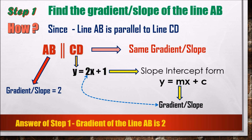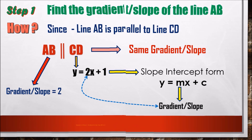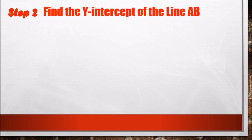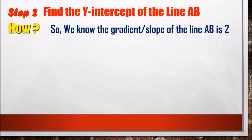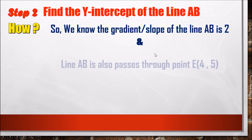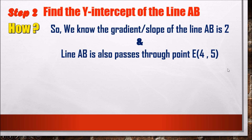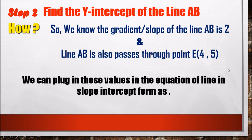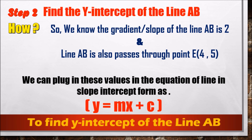That's easier than you think! Now let's move on to step 2: find the y-intercept of line AB. The y-intercept is the value of y when x is 0, or the point where a line cuts the y-axis on the graph. Since the gradient of line AB is 2, and line AB passes through point E where x is 4 and y is 5, we can plug these values into the slope-intercept form y = mx + c to find the y-intercept.